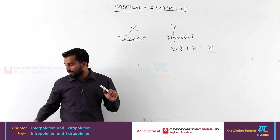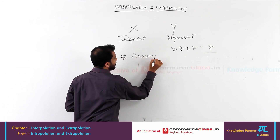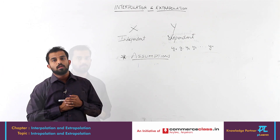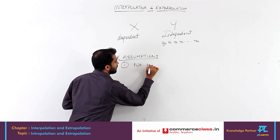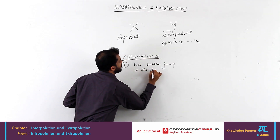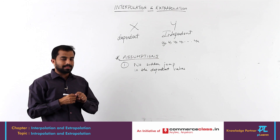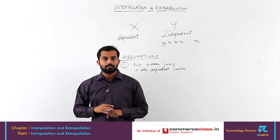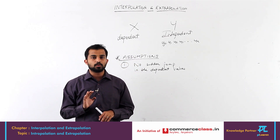There are certain assumptions in order to use interpolation and extrapolation. The first assumption is that there is no sudden jump in the dependent variables or dependent values. That means if x values are 1940, 1950, 60, and 70, the y values should not jump erratically like 33, 99, 205, minus 3. They will not give you such a question — there is no sudden jump in the values.